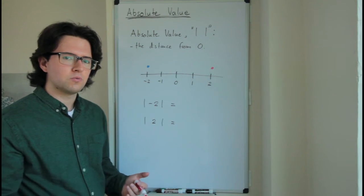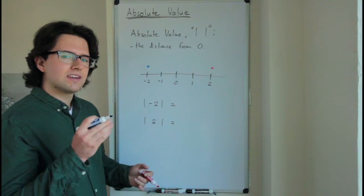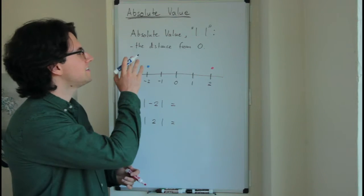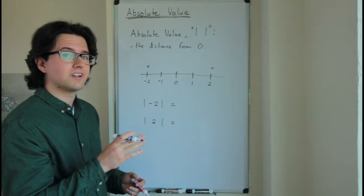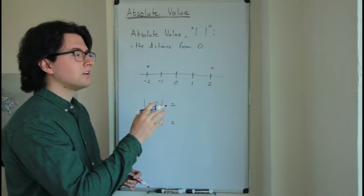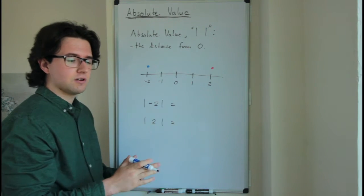What is absolute value? An easy way to think of it is absolute value is the distance a number is from zero on a number line. And we mark it using vertical lines on either side of the number.